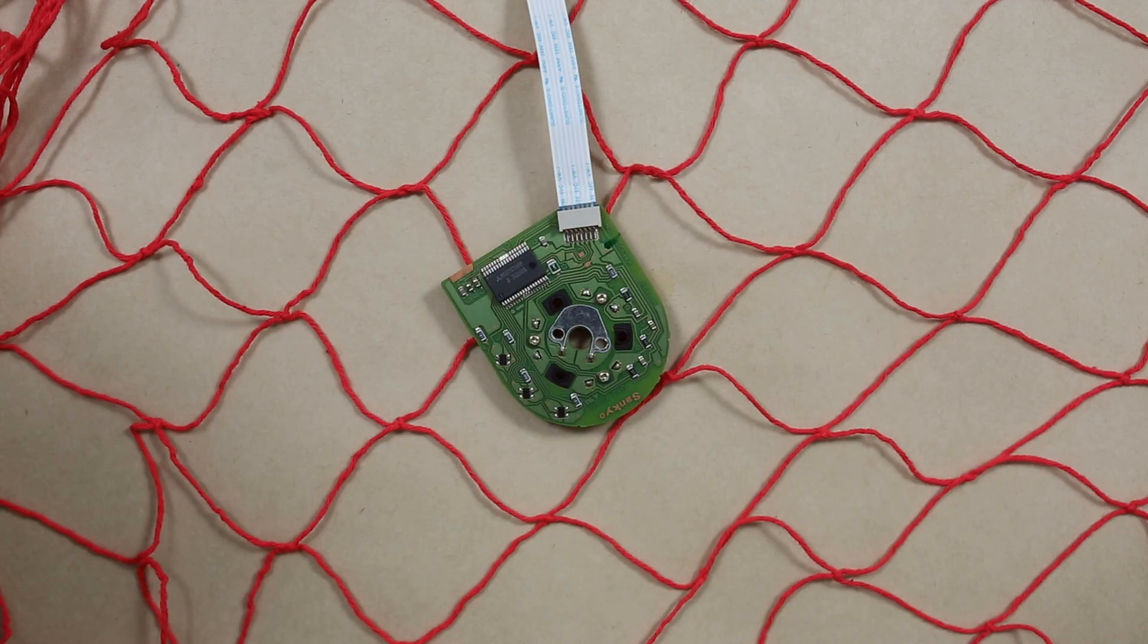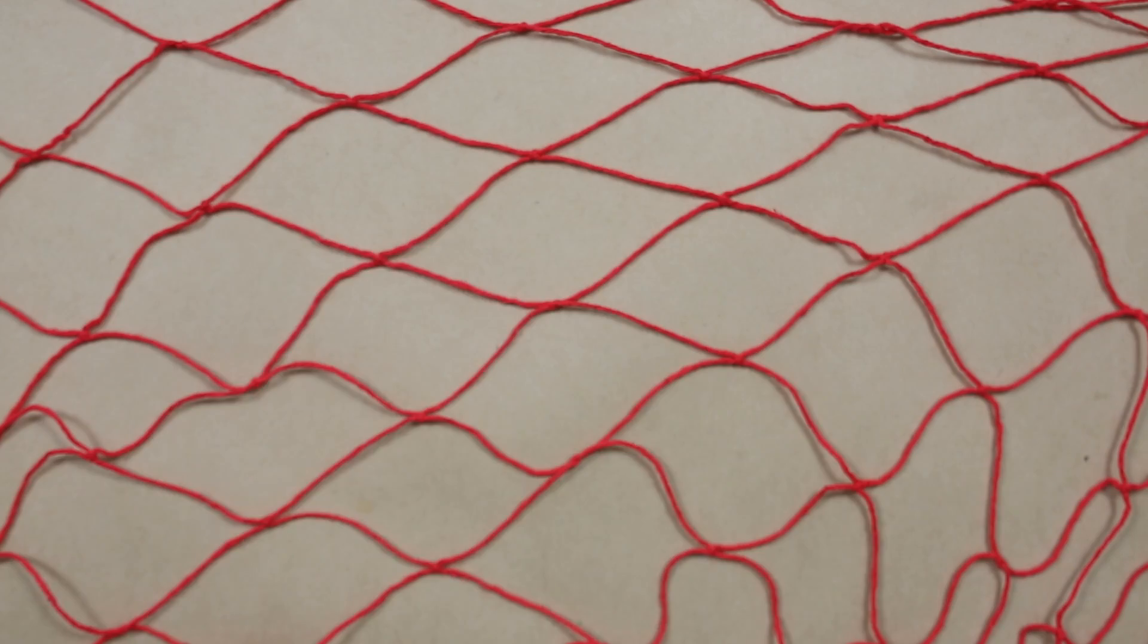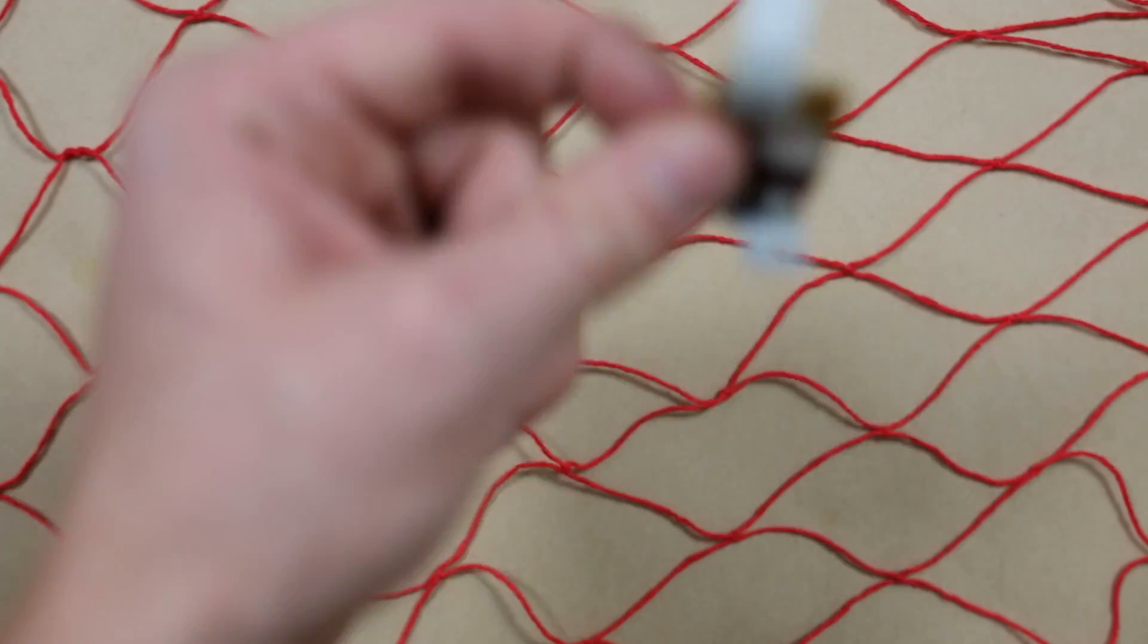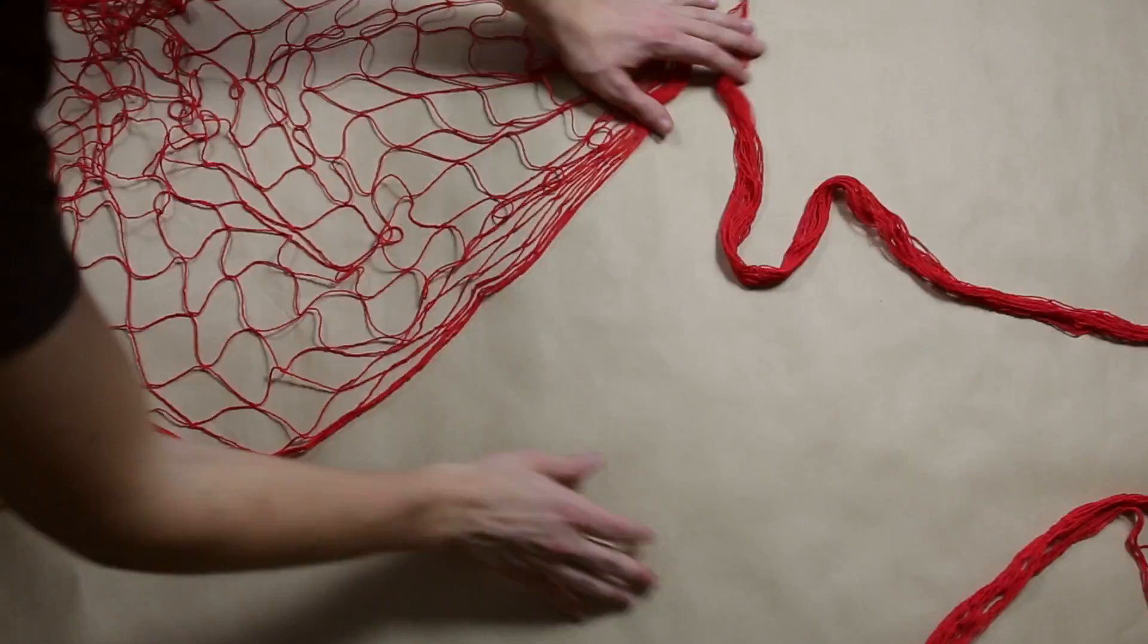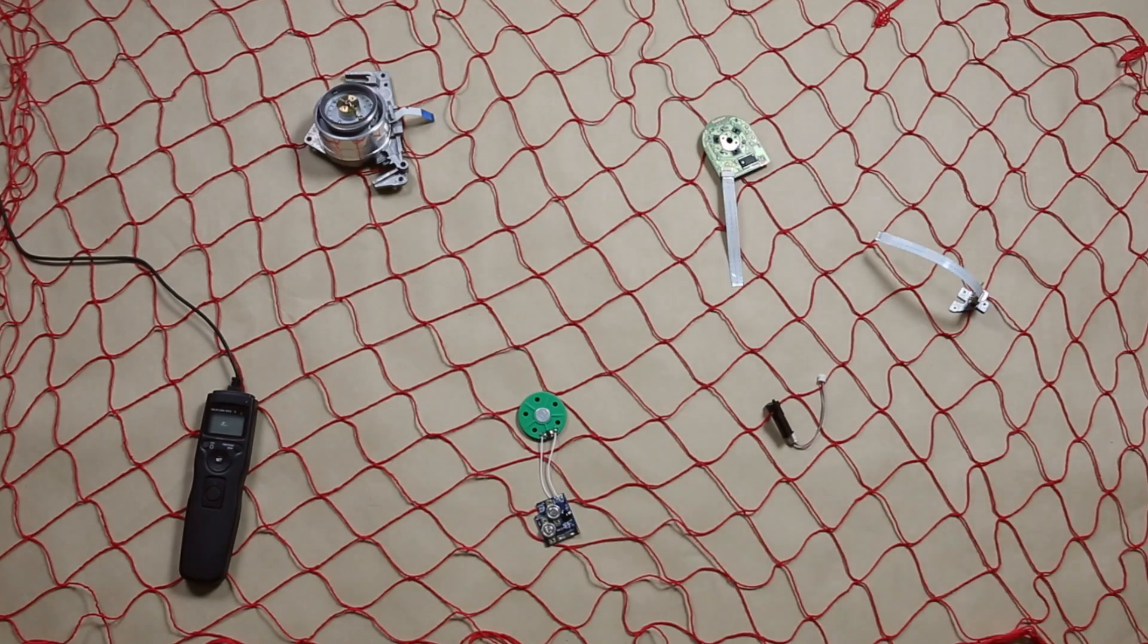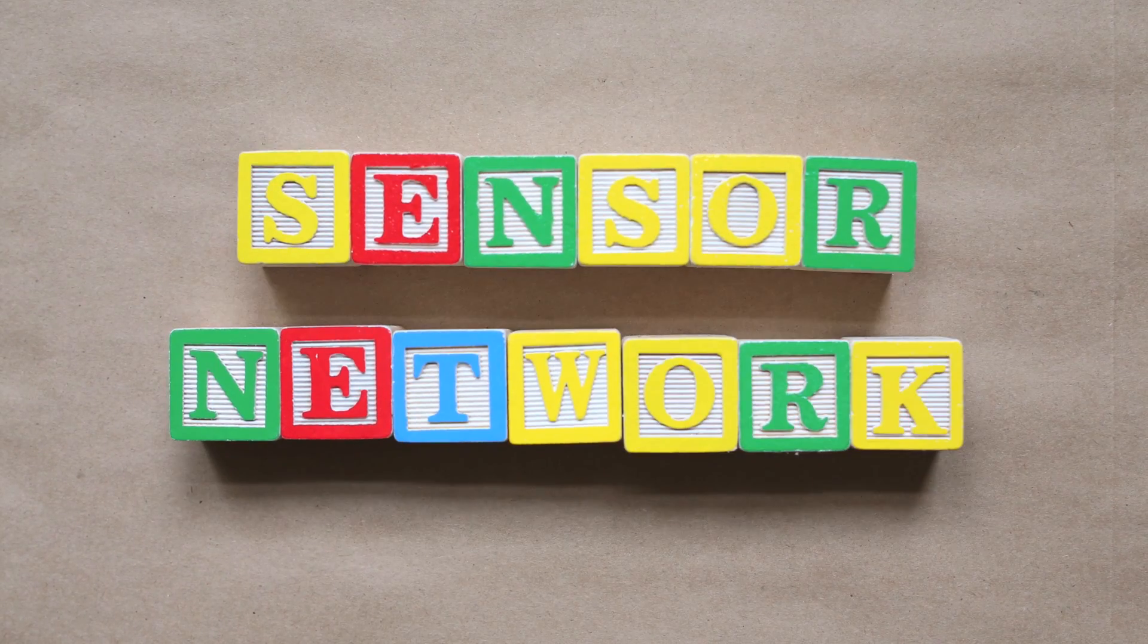Now imagine if we had nerve nets made out of electronics. And imagine if we could put them anywhere, not just on our bodies, like one big external nervous system. These electronic nerve nets are called sensor networks, and they already exist.